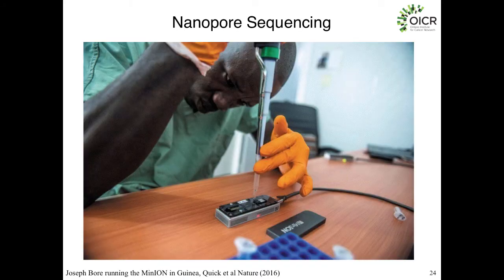The last sequencer we're going to talk about is the Oxford Nanopore MinION. I really like this sequencer — it's incredibly unique and gives you a lot of different capabilities. The nanopore sequencer is the first portable sequencer.